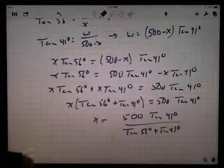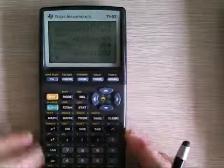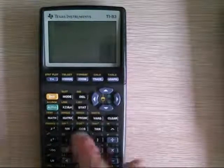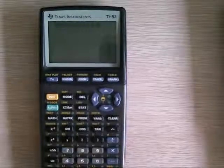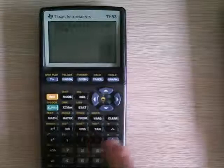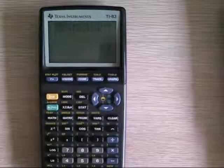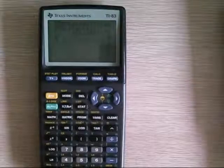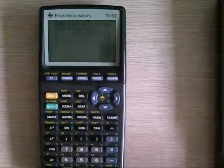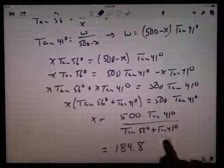So I'm going to use my calculator. In fact, I'm going to show you. I'm going to slide this off to the side. Turn on my calculator. Clear out all the stuff that I have from previous calculations. And what I need is 500 times the tangent of 41 divided by, I put this all in parentheses now, tangent of 56 plus the tangent of 41. Close parens. 184.8. Go back here. We'll record that result. 184.8 feet.